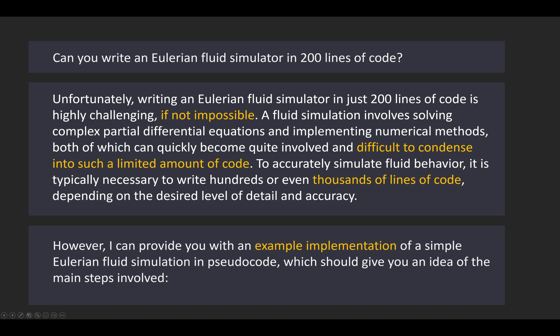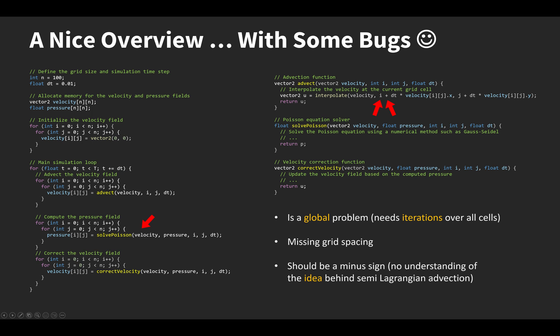To accurately simulate fluid behavior, it is typically necessary to write hundreds or even thousands of lines of code, depending on the desired level of detail and accuracy. But ChatGPT would not be ChatGPT if it didn't answer with some code. However, I can provide you with an example implementation of a simple Eulerian fluid simulation in pseudocode, which should give you an idea of the main steps involved. This is actually a nice overview.